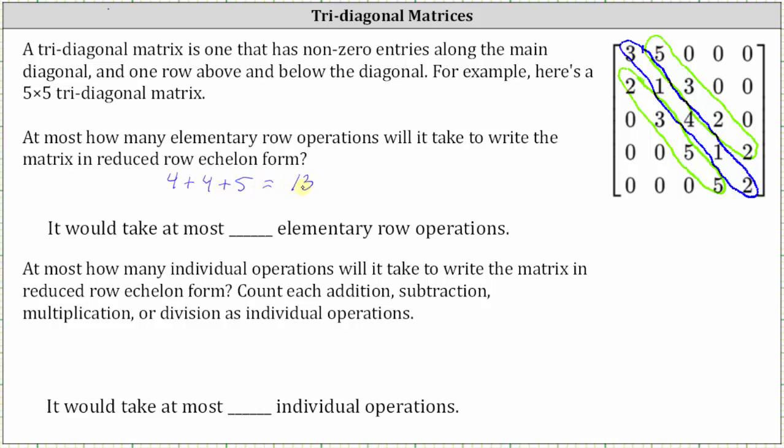Also notice how there are 13 elements in the matrix. It would take at most 13 elementary row operations to write the matrix in reduced row echelon form. We say 'at most' here because it is possible that one row operation could produce two zeros, or we could already have a one along the main diagonal.